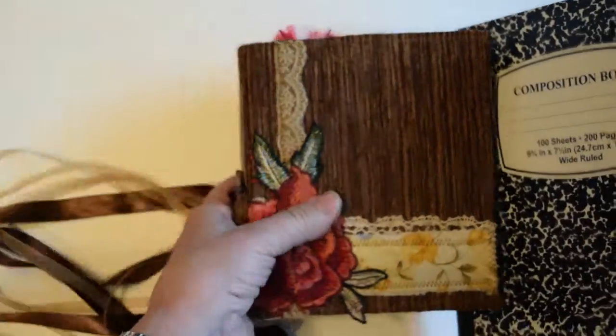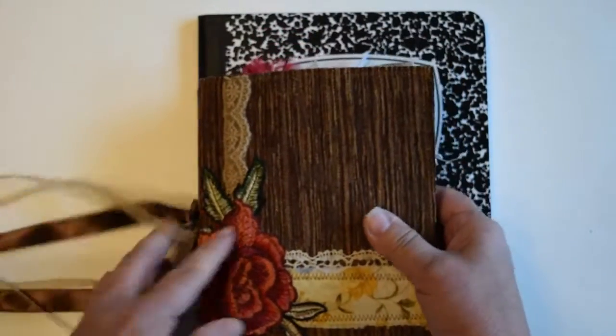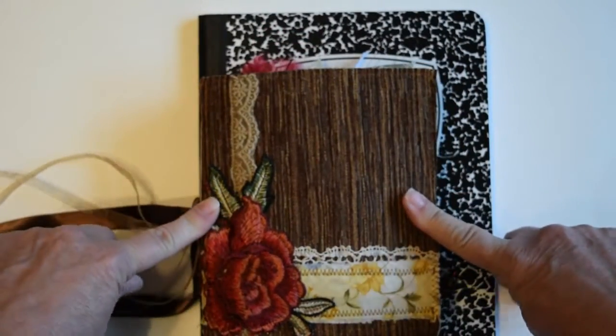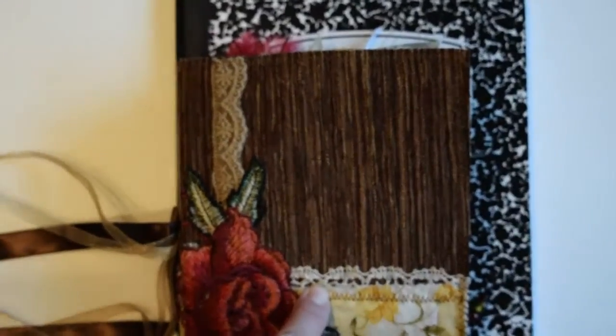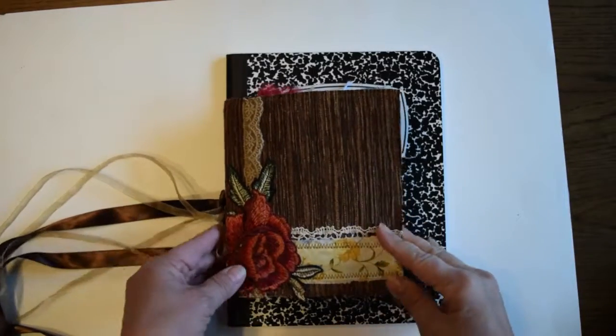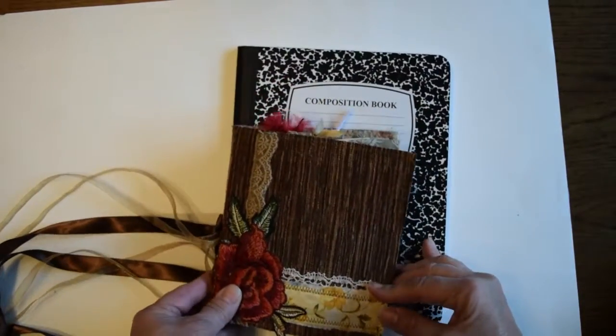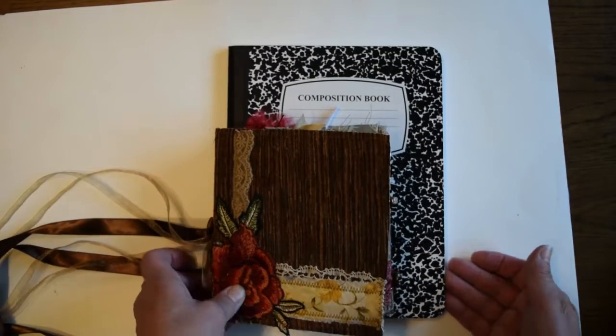So here is a composition book, and then the journal is that big. Let me zoom out just a tiny bit here so you can see it there. So the journal is like that compared to a composition book.